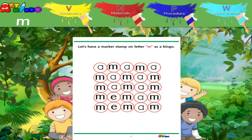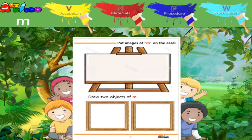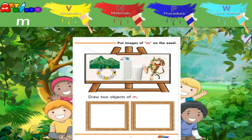Let's have marker stamps. Press dots on the letter M's. Look at the easel. Press dots on the easel.